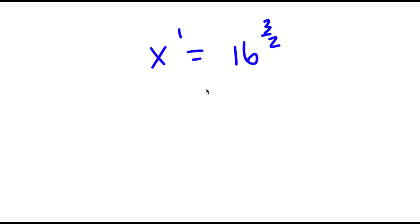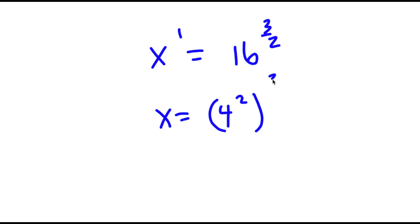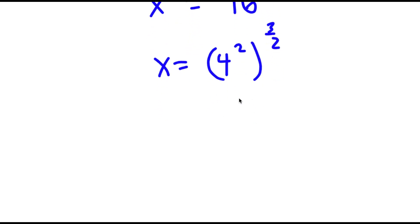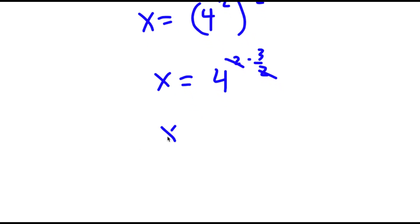So 16 to the power of 3/2: 16 is the same thing as 4 squared. So now I have 4 squared, to the power of 3/2. Using the rule a to the m to the n equals a to the m times n, this equals 4 to the power of 2 times 3/2. Now the 2s cancel out, so I have x is equal to 4 to the power of 3.